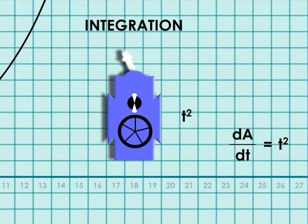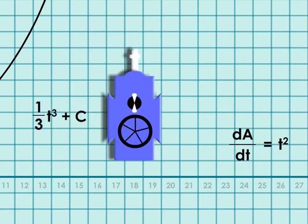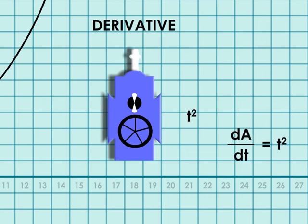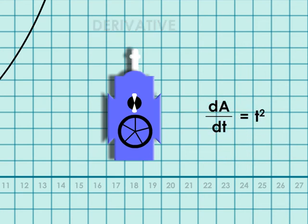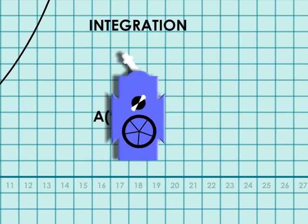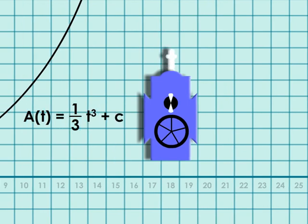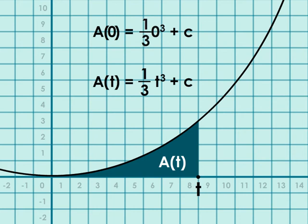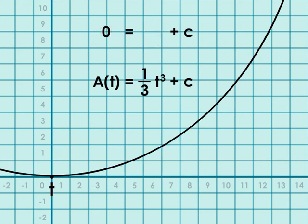Trying various functions to see which one has t squared as its derivative, one-third t cubed eventually comes to mind. That works. And so does one-third t cubed plus a constant because the derivative of a constant is zero.